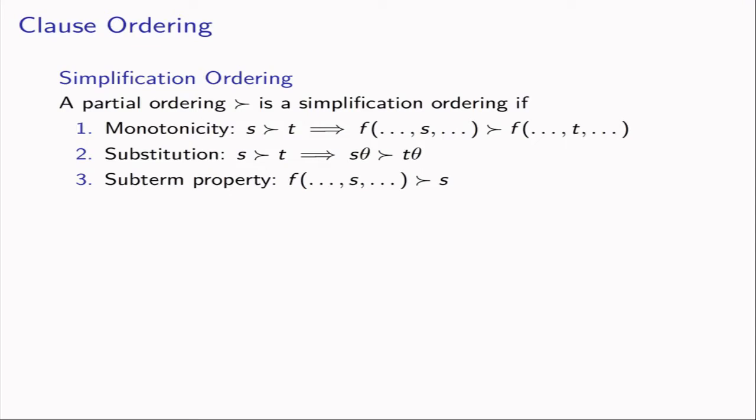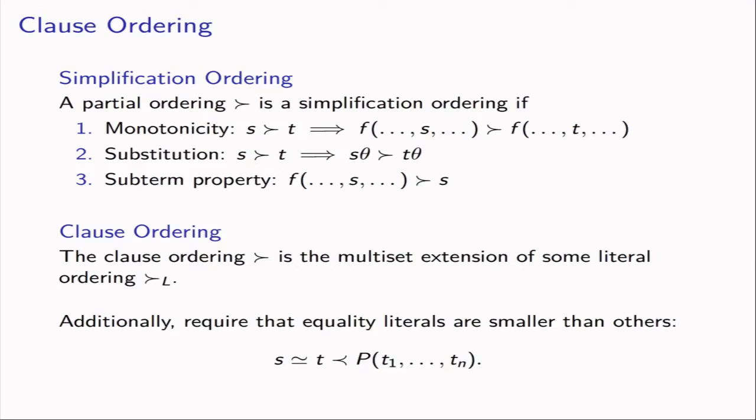We start with a simplification ordering as term ordering — a partial ordering satisfying three conditions. First, monotonicity: replacing a term inside another with a smaller one makes the whole term smaller. Second, stability under substitutions: if a term is larger than another and you apply a substitution, the ordering relation is preserved. Third, the subterm property: any term is larger than all of its subterms. Given such a term ordering, we can extend it to a clause ordering using the multiset extension, and we require that equality literals are smaller than all other literals.